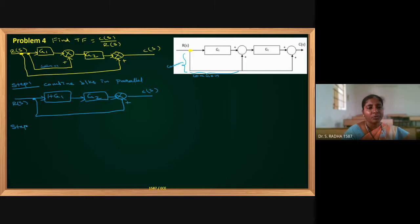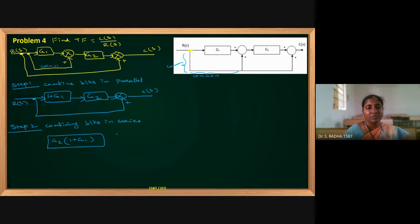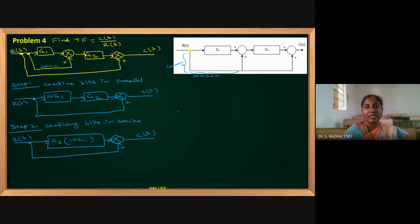Now coming to step 2: you can see two blocks are in series — combining blocks in series. If in series, we multiply them: G2 times (1 plus G1). The summing point remains as it is. R(S) is the input and C(S) is the output. We will have unity feedback again here with a positive sign. This is step number 2 — I have combined blocks in series.